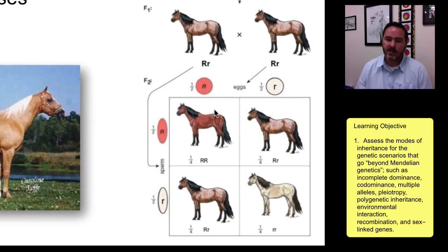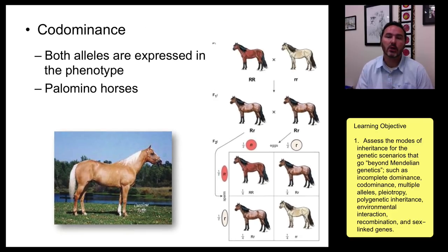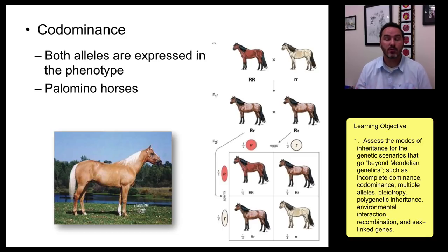When you do the F2 generation, you get the big R big R, big R little R, and little R little R combinations. It looks like incomplete dominance, but it's not. If you actually go in and look at the hairs on this horse, they are not tan colored hairs — it's actually dark chocolate hairs and light cream colored hairs mixed together such that to our eyes it appears tan. So both alleles are being produced.